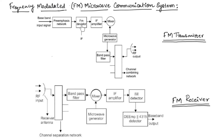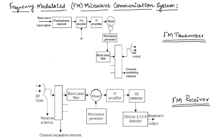The signal from the pre-emphasis circuit is applied to the FM deviator that provides modulation. At this stage, low frequencies are modulated and they are converted into high frequencies using phase modulation. The output of the FM deviator is applied to the IF amplifier, which amplifies the signal, and this IF amplifier passes the signal to the mixer.